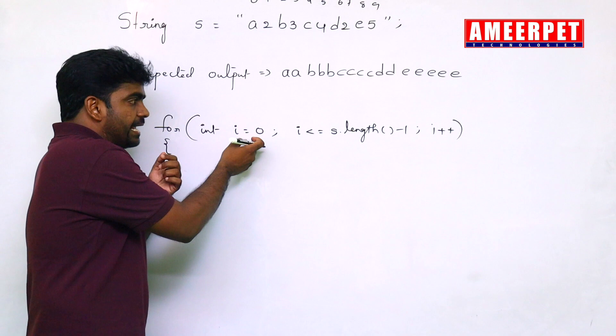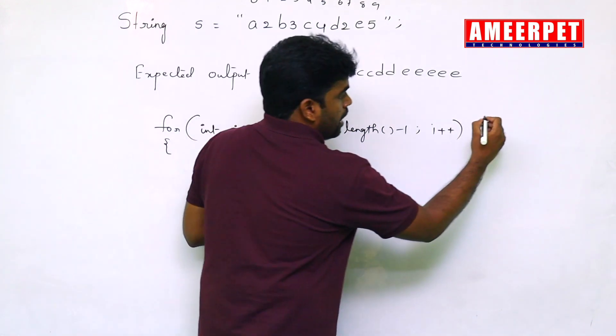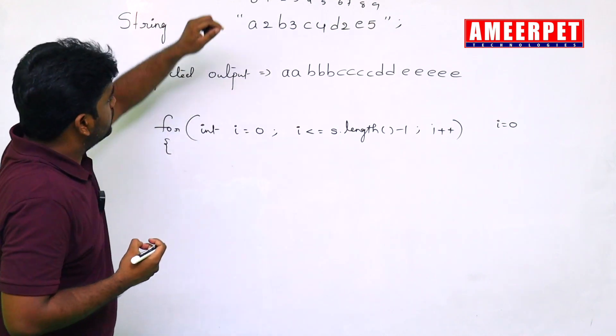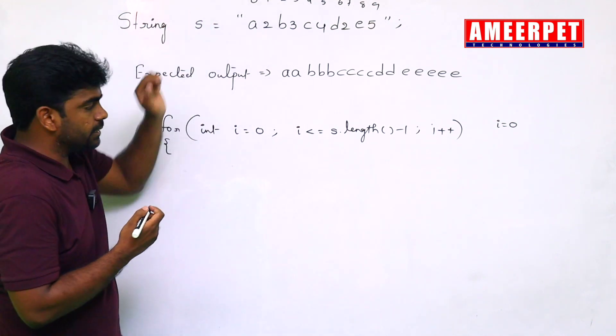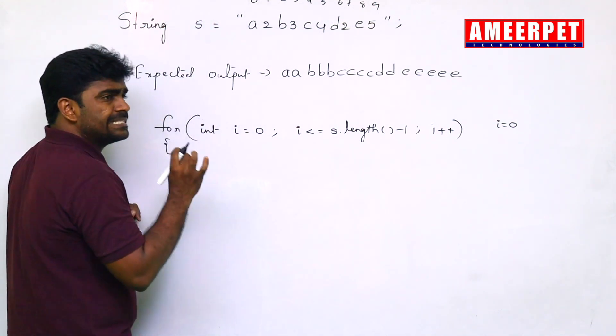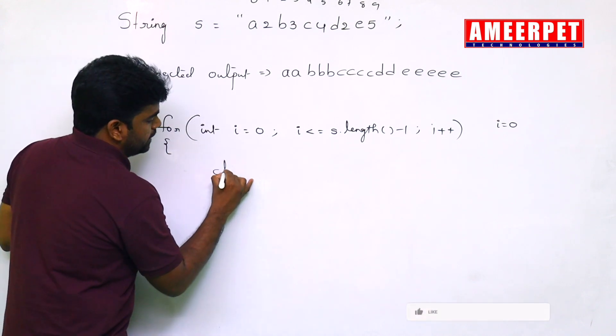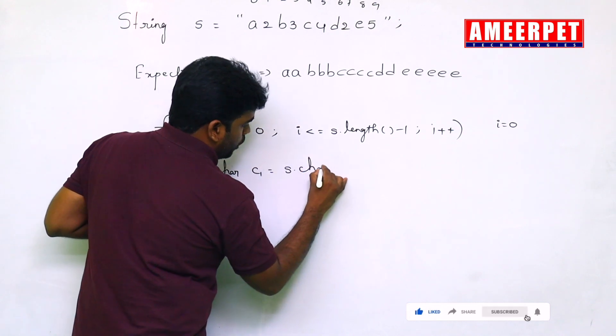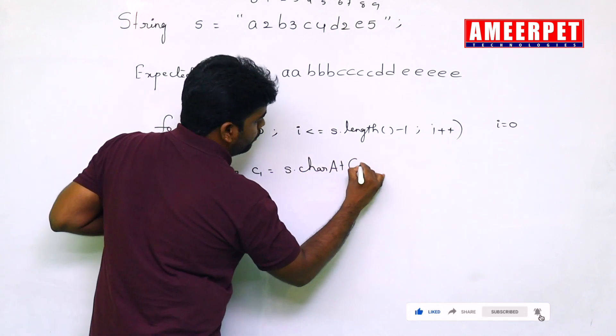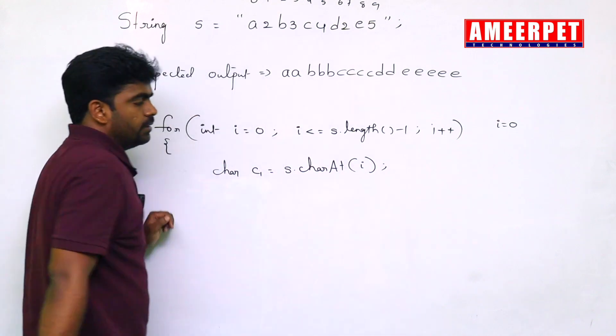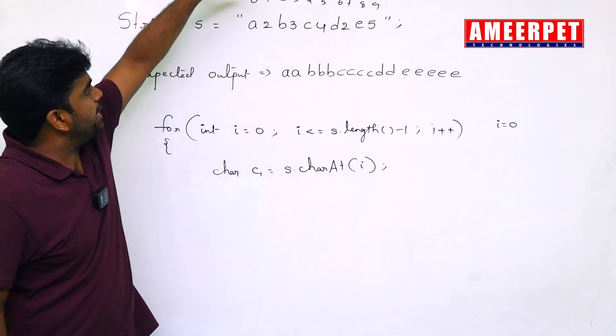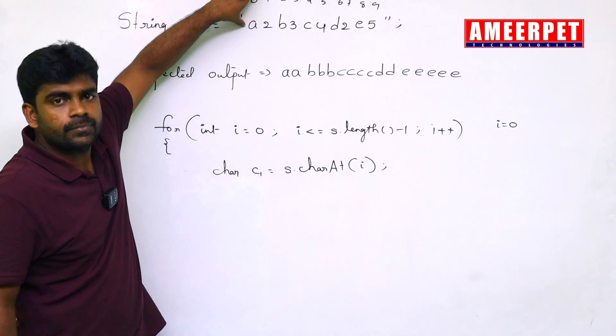Once the control comes inside, first i equals to 0. Now, that 0th location character, I am collecting into C1. Character C1 equals to S dot charAt of i. i means what? The 0th location character is A.